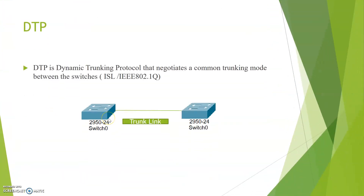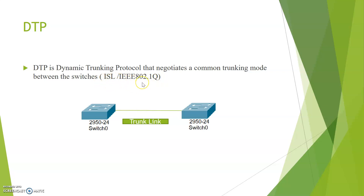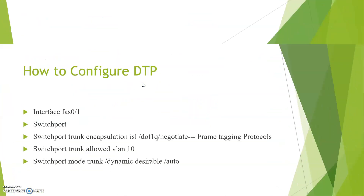What is DTP? DTP is a Dynamic Trunking Protocol that negotiates a common trunking mode between two neighboring switches. It can negotiate either Inter-Switch Link or IEEE 802.1Q — where ISL is Cisco proprietary and 802.1Q is standard-based.